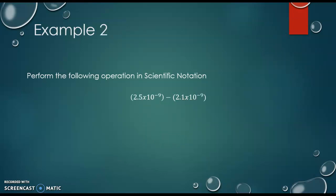Here's a subtraction one. Again, I am looking to make sure that we have the same base, and as long as we have that same base, then we can move on. I'm going to do 2.5 minus 2.1, and then we're going to do times 10 to the negative 9. 2.5 minus 2.1 is 0.4 times 10 to the negative 9.